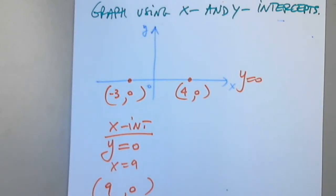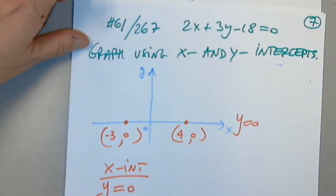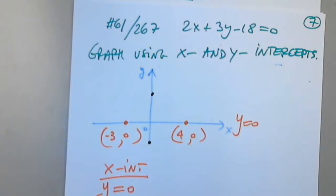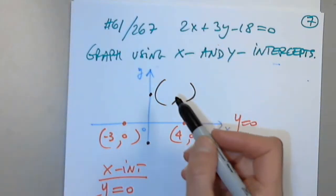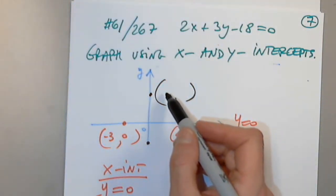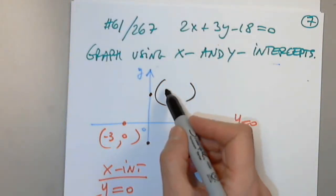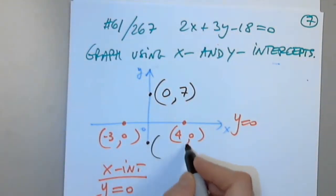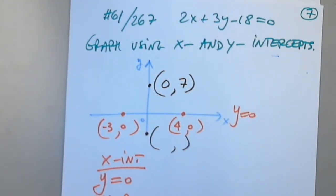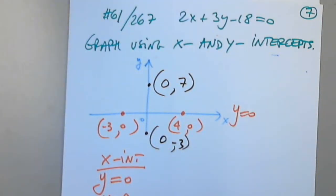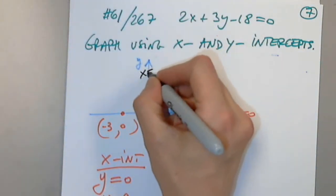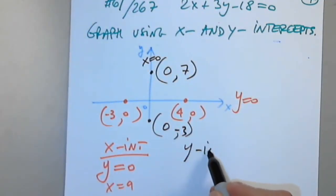Now I want something else — make up two points on the y-axis. Points like 0 comma 8. All points on the y-axis have x equal to 0, so the equation of that line is x equals 0. So when I want to find the y-intercept, I set x equal to 0.